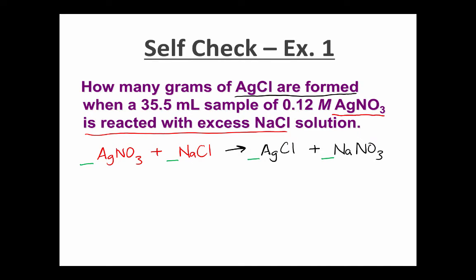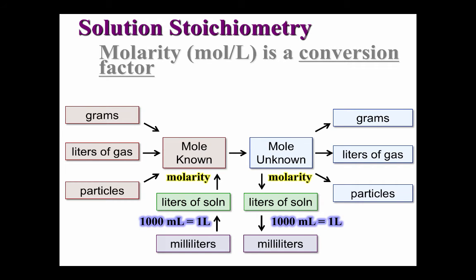Now we'll balance the equation, which is an easy task — all of the coefficients are ones. I'll write all the important information near my equation. There are 35.5 milliliters of AgNO3, and its concentration is 0.12 moles per liter. Another reading of the problem reveals our unknown: grams of AgCl. We're looking for grams of AgCl, and the stoichiometry strategy shows we should start with the milliliters of the known.